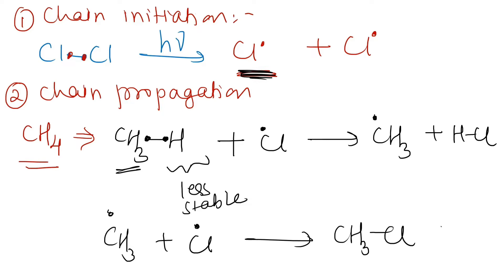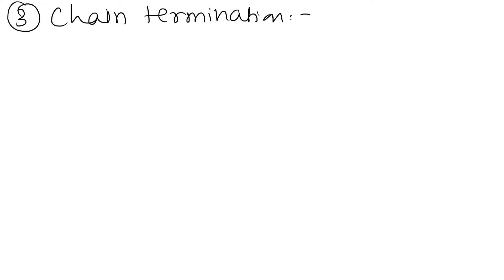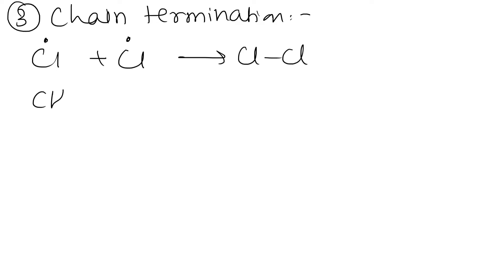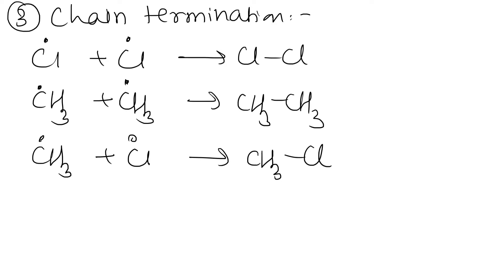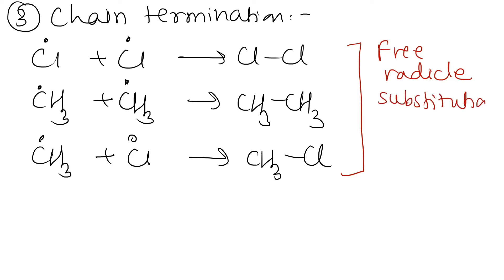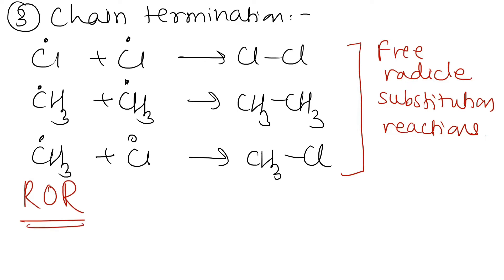In the third step — chain termination — there are many radicals in the reaction environment. Many methyl radicals can react with each other, forming many other products. All of these are called free radical substitution reactions.